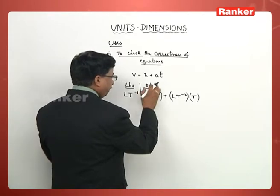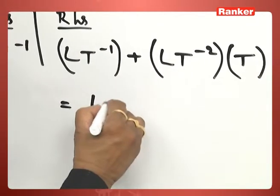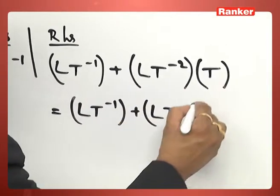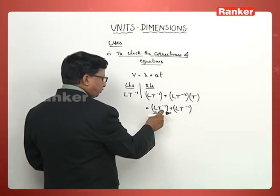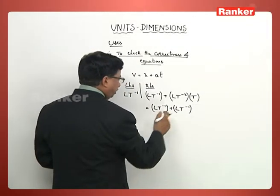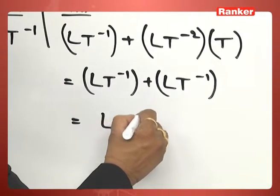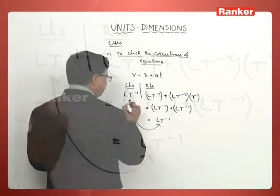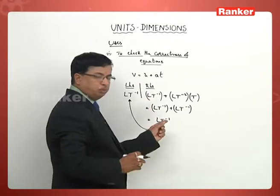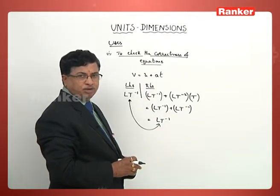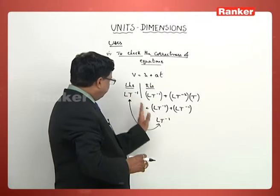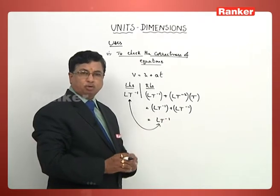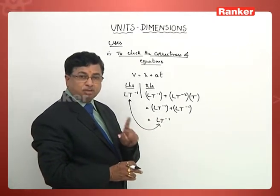Simplifying the right-hand side values: L T⁻¹ plus, since acceleration times time gives L T⁻² × T, this becomes L T⁻¹. So L T⁻¹ plus L T⁻¹ again gives L T⁻¹. The left-hand side dimensional formula is equal to the right-hand side dimensional formula. Since the dimensional formula is the same on both sides, we can conclude the given equation is dimensionally correct.